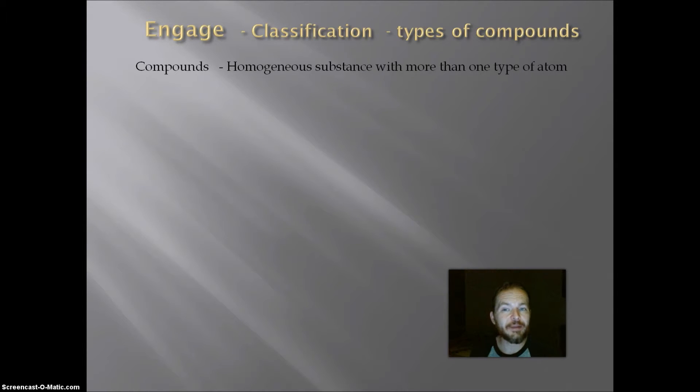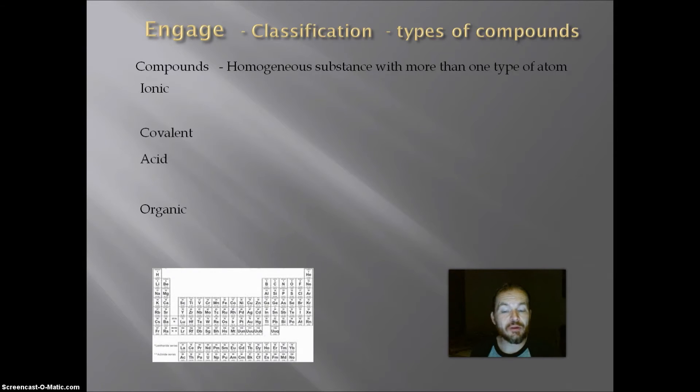And we can classify compounds into four different categories. Compounds can be ionic, they can be covalent, they can be acids, or they can be organic. And the key thing we want to start looking at to tell the difference between them is what sort of elements are found in them.